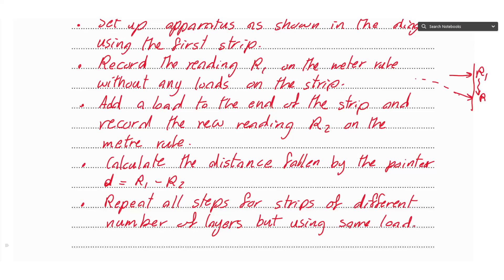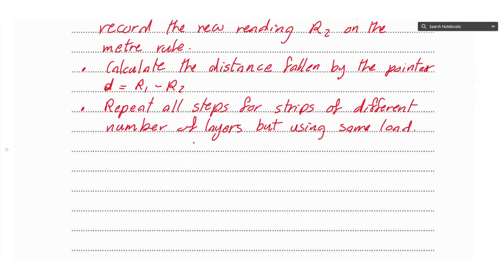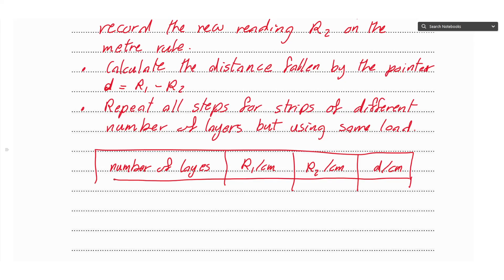Now we draw the table. We have number of layers as the independent variable. We measured reading 1 per centimeter, reading 2 per centimeter, and we calculated the distance d per centimeter. Now close the table—you do not enter any values in the columns of the headings. We can say plot a graph of number of layers on the x-axis against d per centimeter on the y-axis, since d is the dependent variable.